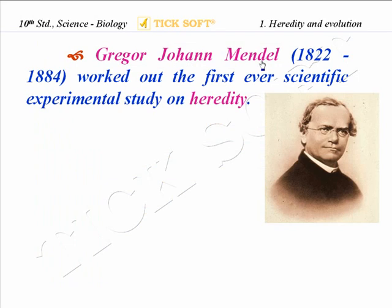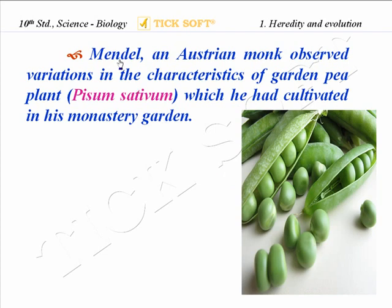Gregor Johann Mendel, 1822 to 1884, is known as the Father of Genetics. He worked out the first ever scientific experimental study on heredity. Mendel was an Austrian monk who observed variations in the characteristics of the garden pea plant, Pisum sativum, which he had cultivated in his monastery garden. Here we are able to observe the pod of the pea plant and the peas which emerged from the pod.